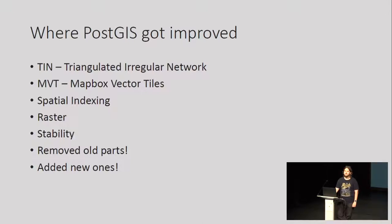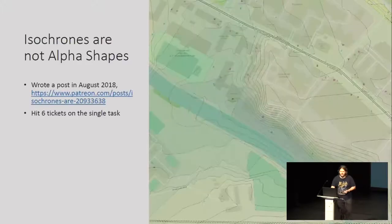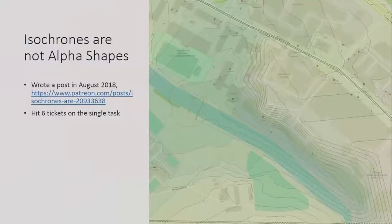We removed old parts — if you've ever seen the super old ST_Accum function that was there before array_agg in PostGIS, that's not there anymore, and some new functions got added. Last year I wrote an article called 'Isochrones are not alpha shapes,' after the pgRouting project was trying to get rid of their alpha shape function, which they believed should be used for isochrone generation.